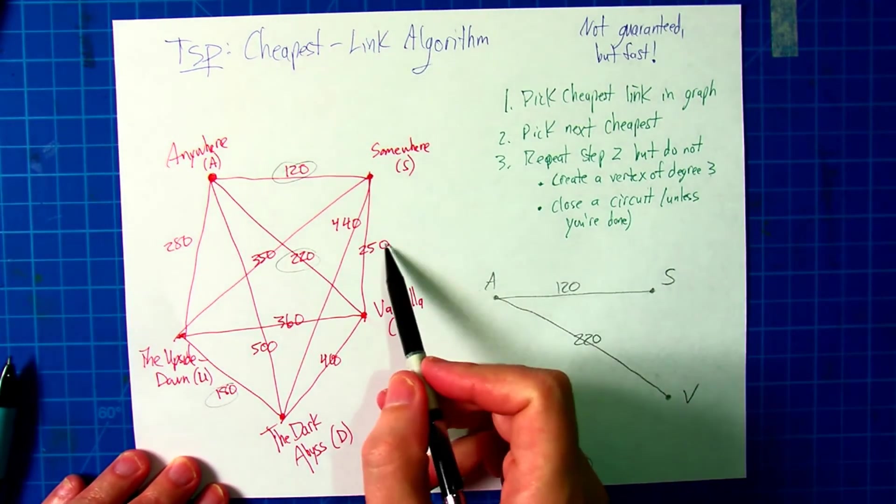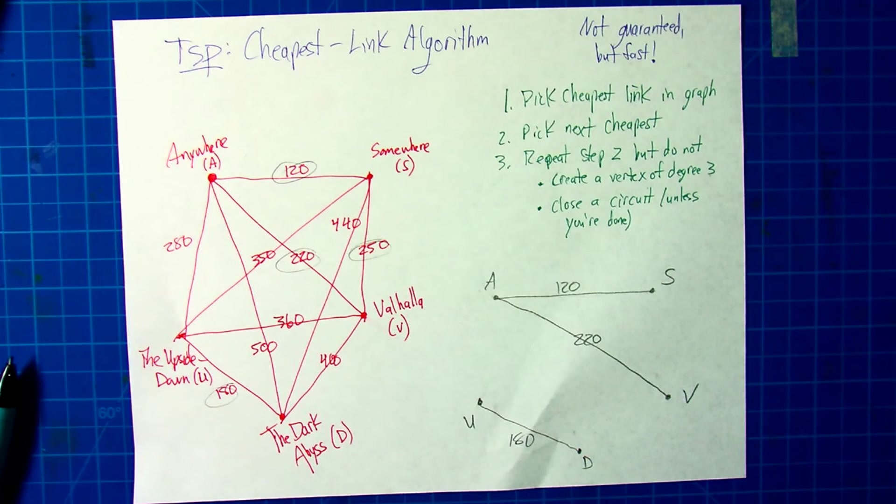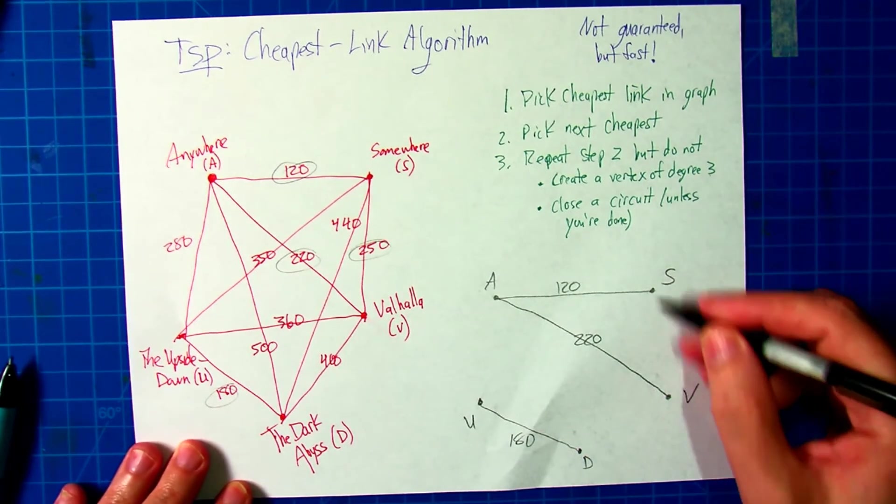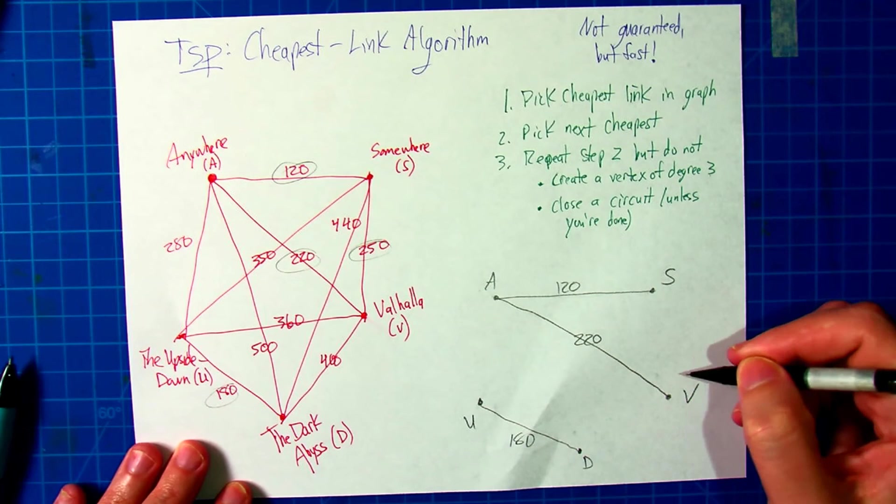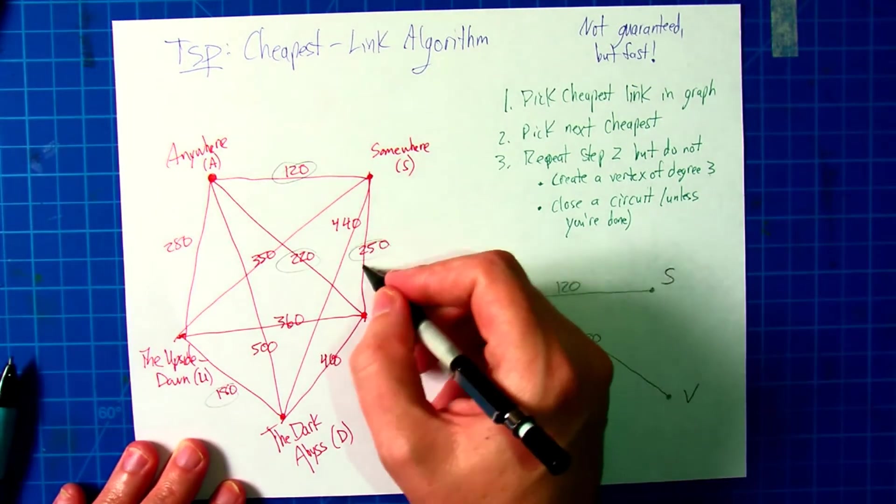Now, look at what is left. The next cheapest is this 250, but can we add this 250 to our circuit? No. It wouldn't create a vertex of degree three, but it would close the circuit here, and we wouldn't have a way to go from this section of the graph to this section, so the 250 is out.